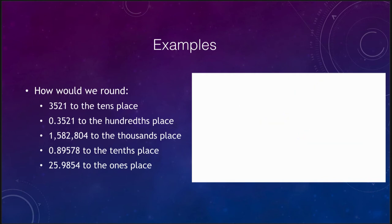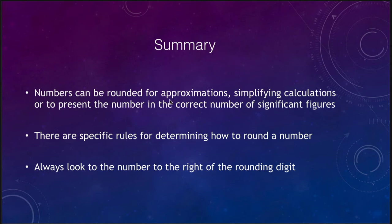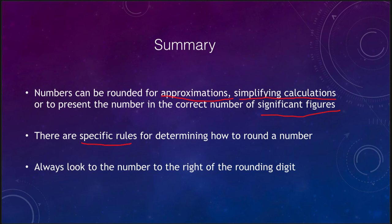Let's finish up with a summary. Numbers can be rounded for various reasons: approximation, to simplify calculations, or to present a number in the correct number of significant figures. There are specific rules: determine your rounding digit, then look at the number to the right of it. If it is five or greater, increase the rounding digit by one. If it is four or less, simply ignore the numbers to the right. Always add placeholder zeros if the rounding digit is to the left of the decimal point; if it is to the right, you do not. The key is always looking at the number to the right of the rounding digit.